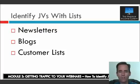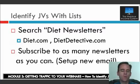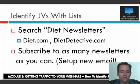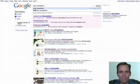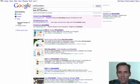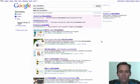Here's how you're going to do it. You're going to research newsletters, find people with blogs, and find people with customer lists. To find people with newsletters, all you do is go to Google and type in whatever niche you're looking for. If I'm in the diet niche, I type in 'diet newsletters.' Type the keyword, space, newsletters, and you're going to find a wealth of websites that have newsletters.